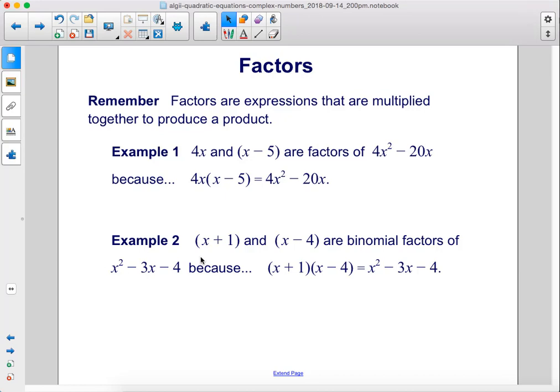Example 2: x plus 1 and x minus 4 are binomial factors of x squared minus 3x minus 4 because if you multiply these together, they equal this polynomial, so they are factors.